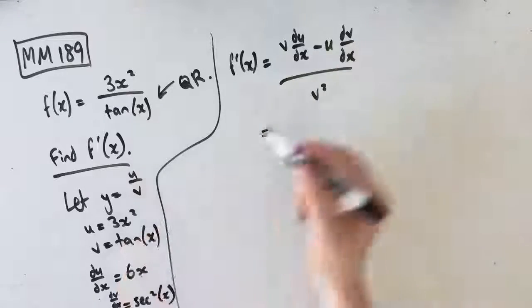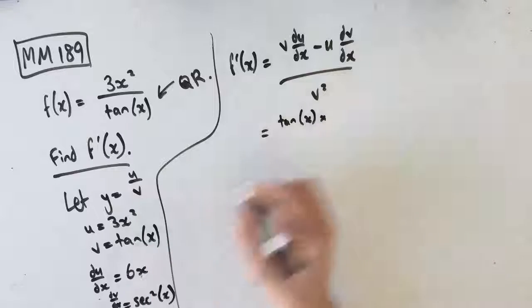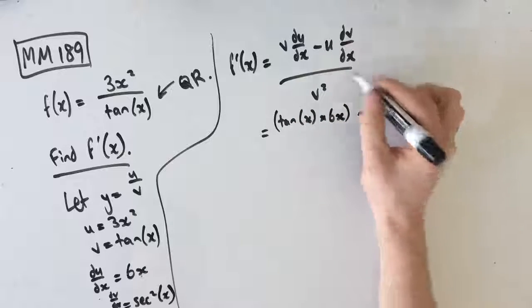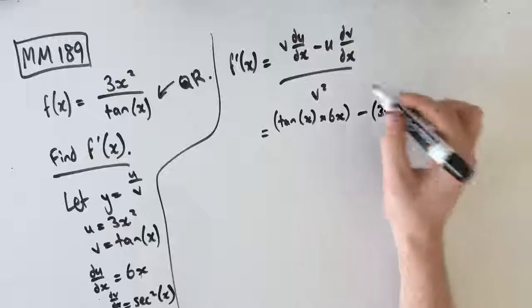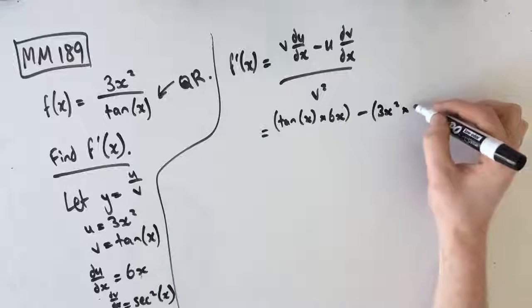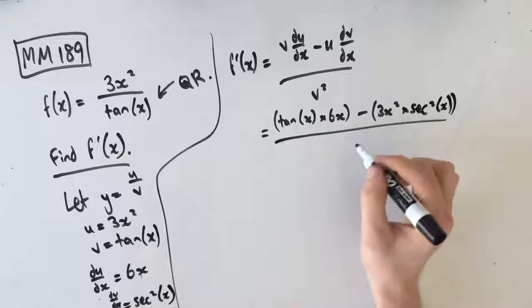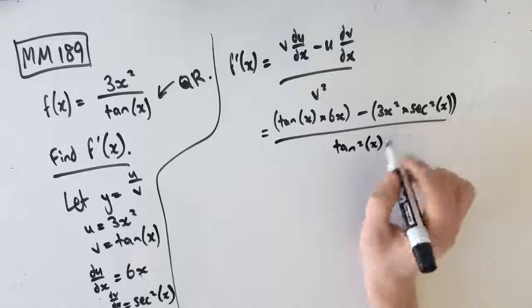So v is tan x. So tan x times du dx, which is 6x minus u, which is 3x squared times dv dx, which is sec squared x over v squared, where v is tan x. So tan squared x. Awesome.